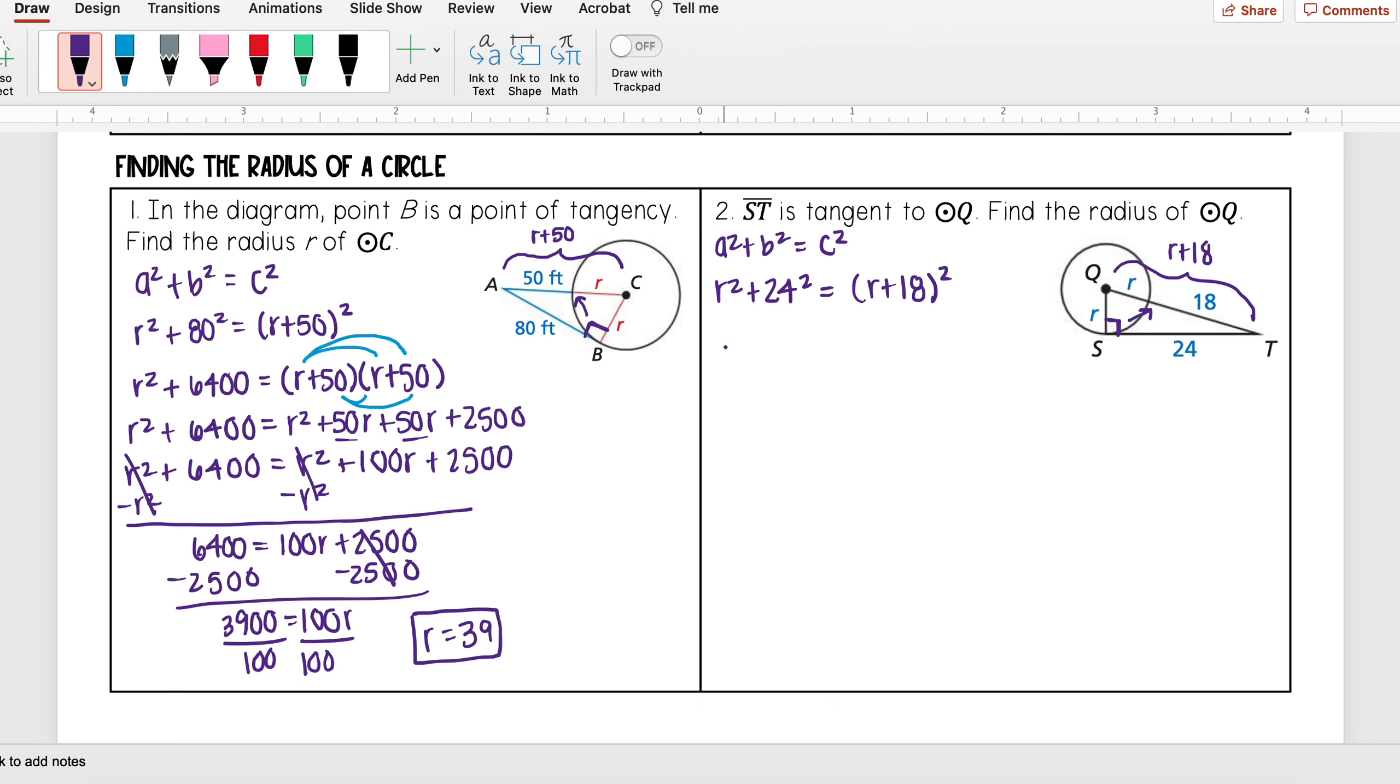Now I can simplify from here. So I have R² + 24 times 24, I get 576. It's equal to—remember when I expand this, this is really saying R + 18 times R + 18.